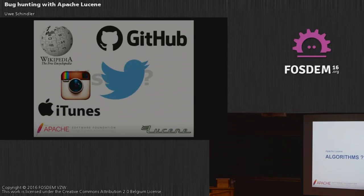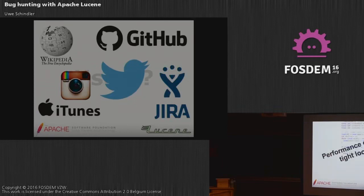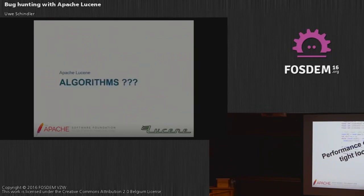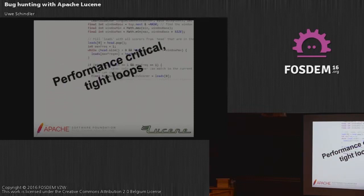What makes Lucene interesting for testing JVM bugs? First, the algorithms. Lucene has huge indexes with billions of terms, partly gigabytes in size. There are a lot of very performance-critical tight loops, which is optimal for the HotSpot optimizer to start doing optimizations, because many of those loops are executed millions of times for each search query. It's very, very low-level Java code — not something like an EJB application. You're processing data all the time.